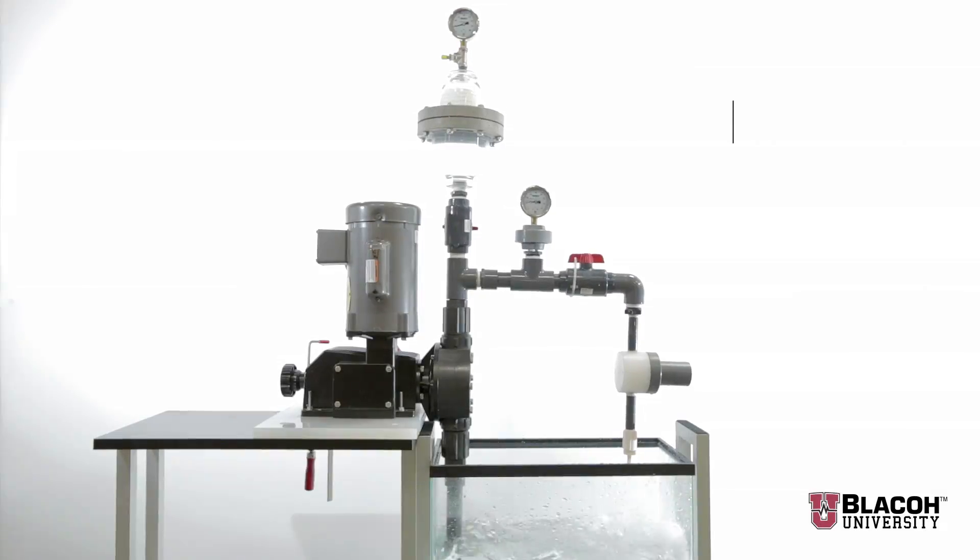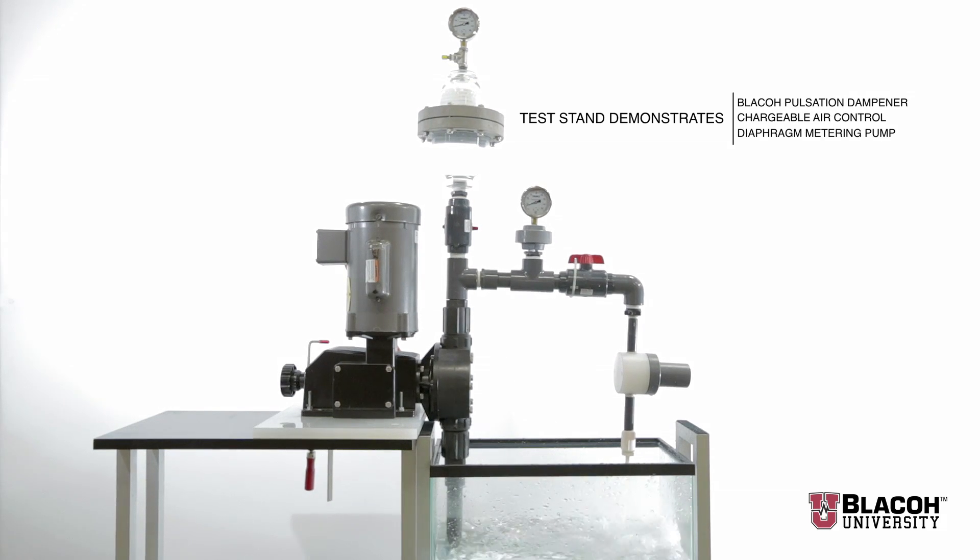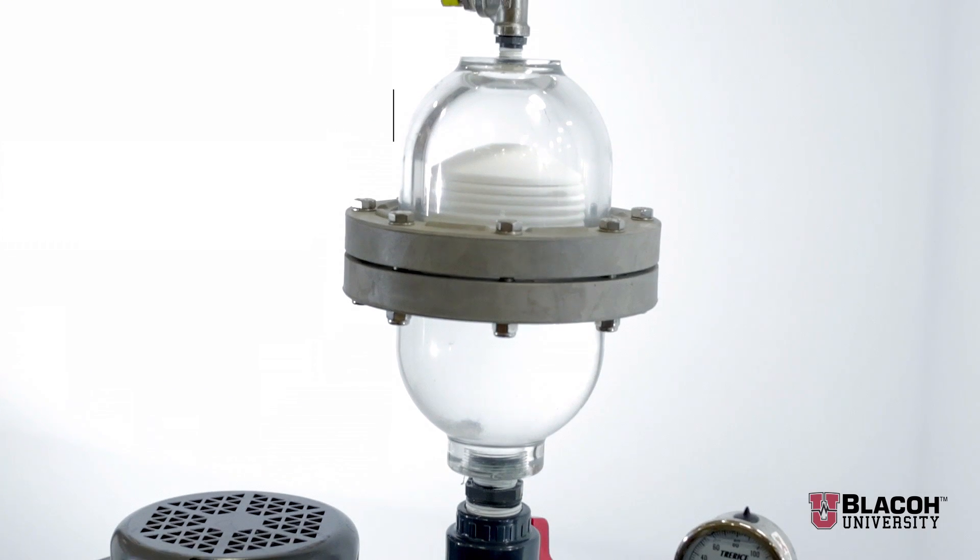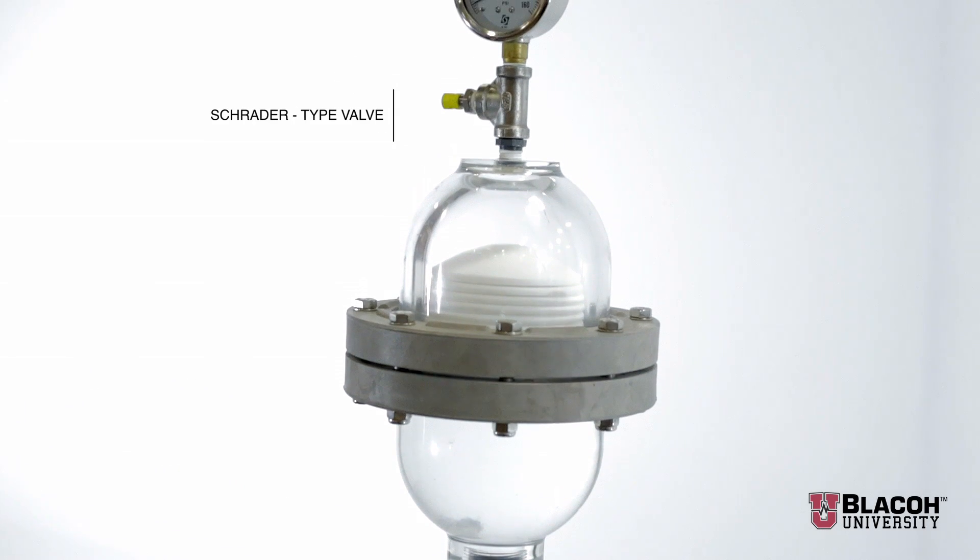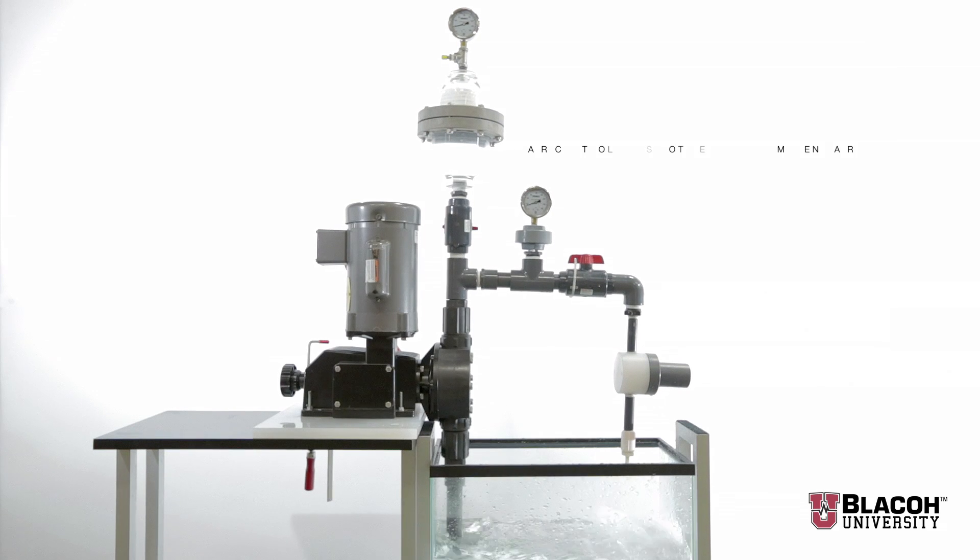This test stand demonstrates the Blaco pulsation dampener with a chargeable air control and a motor driven diaphragm metering pump. The chargeable air control consists of a Schrader type charging valve and a pressure gauge. The chargeable air control does not require any permanent air supply, just an initial charge.